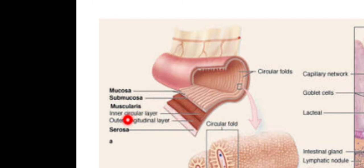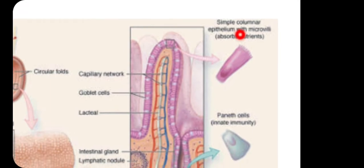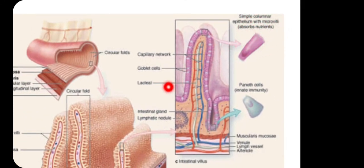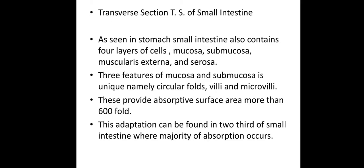These are the layers of the small intestinal wall. As seen in the stomach, the small intestine also contains different layers. There are four layers which are called: mucosa, sub-mucosal layer, muscularis externa layer, and serosa layer.